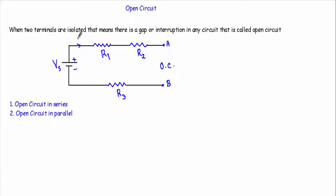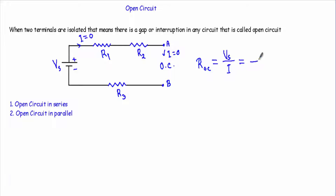The current I will be equal to zero. The resistance of this open circuit, R_OC, will be equal to Vs divided by I. Since current I equals zero, R_OC will be infinity — something divided by zero equals infinity. That means an open circuit provides an infinite resistance to current flow.